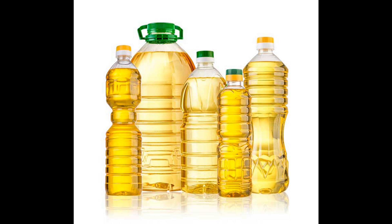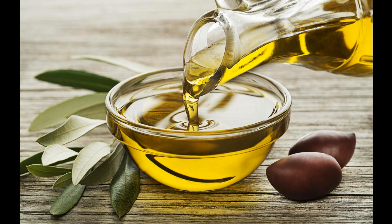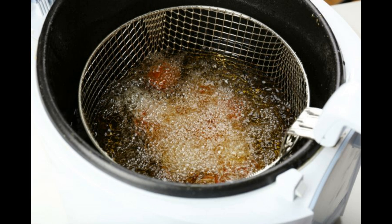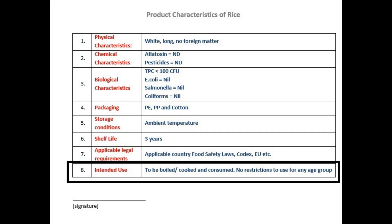Let's take the example of cooking oil. The intended use is: the product is used as a cooking medium to cook various types of dishes and for frying purposes. The expected consumer usage is by all sections of the population unless there is a contraindication for medical or other reasons. You can make a separate document for intended use or add a row or section alongside the product description.